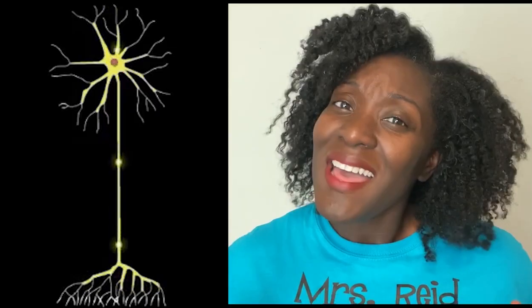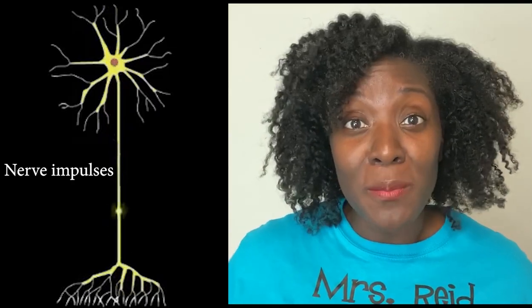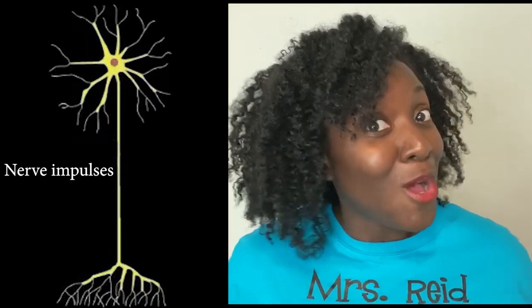How is it possible that a reaction that takes one millisecond to occur has been studied since the 1800s? That reaction is called action potential. Your body has a ton of nerves — approximately seven trillion of them — and their main job is to send nerve impulses called action potentials to different parts of your body.